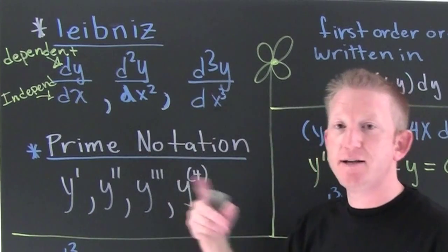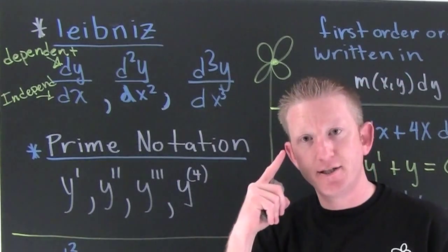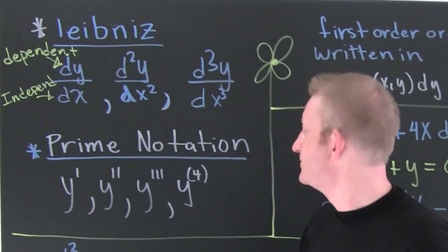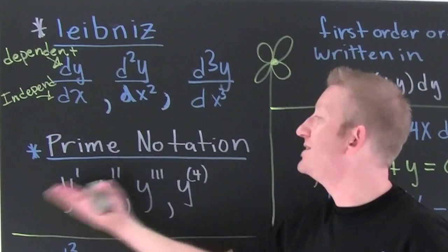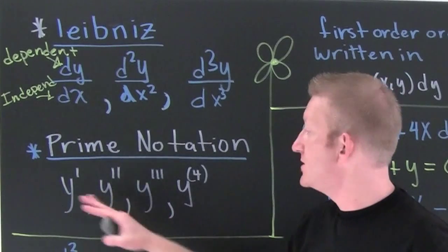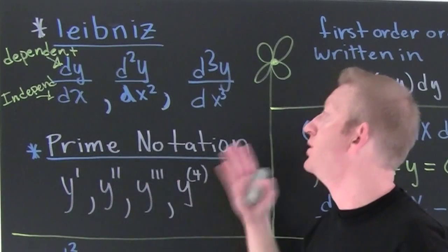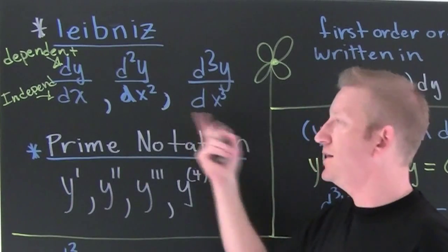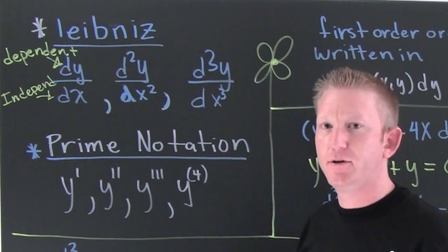The prime notation's advantage is it's easier on the eyes. The disadvantage is you don't know the independent variable.